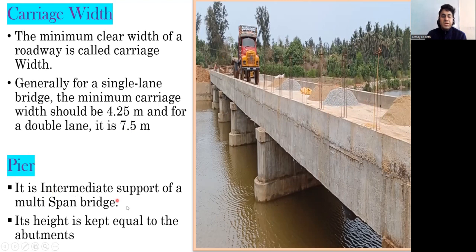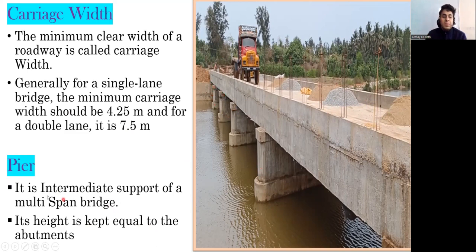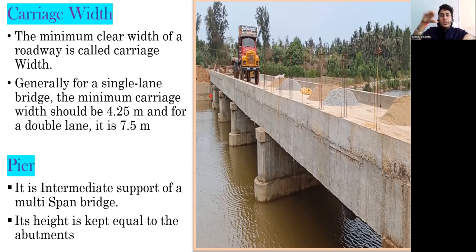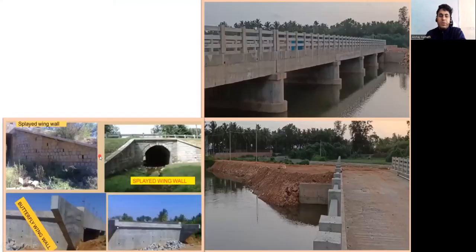Next is pier — the intermediate support of a multi-span bridge is called a pier. Its height is kept equal to the height of the abutment, because both must be at the same level to provide a uniform surface for the deck slab above.